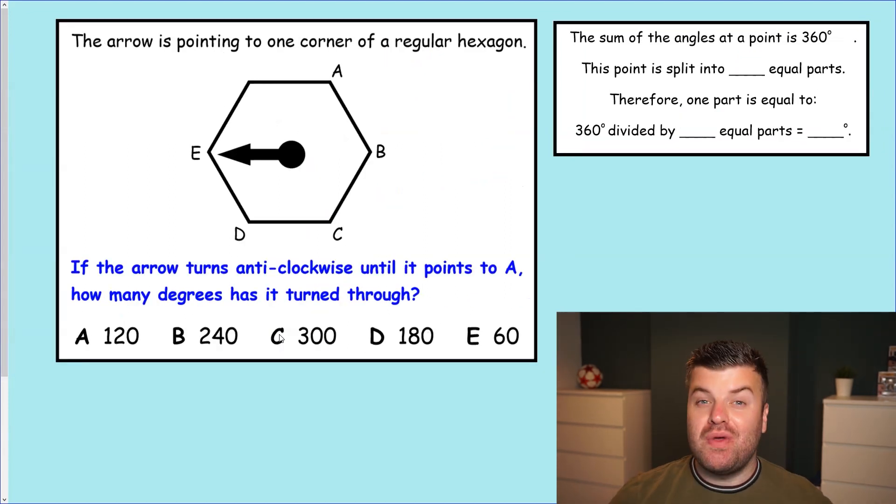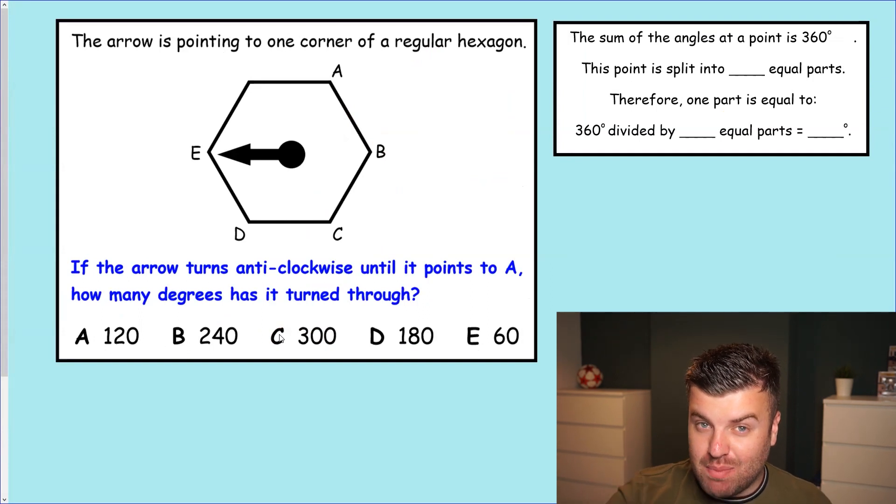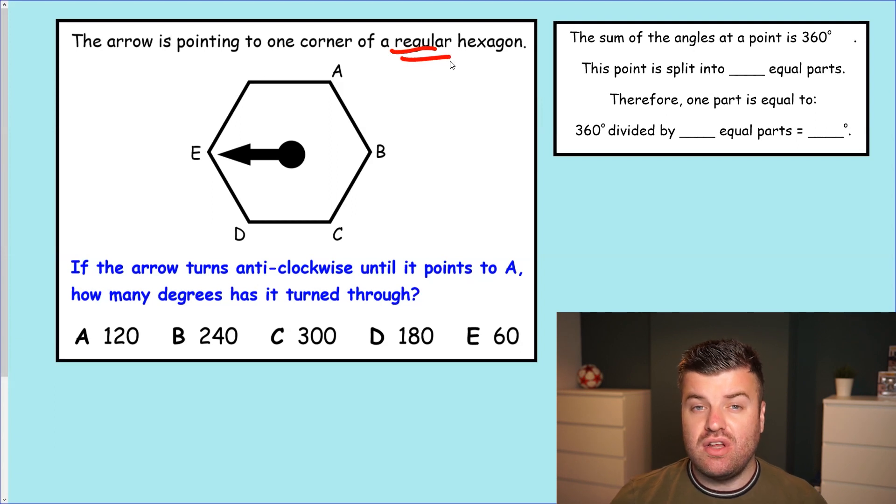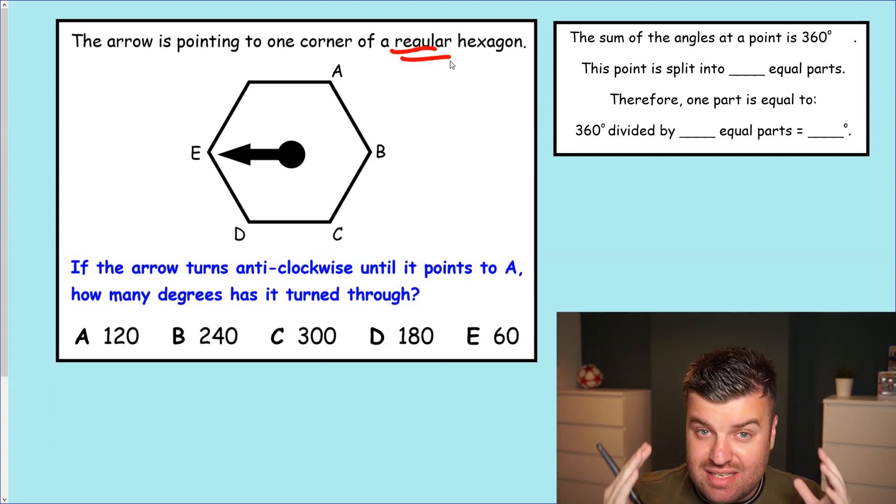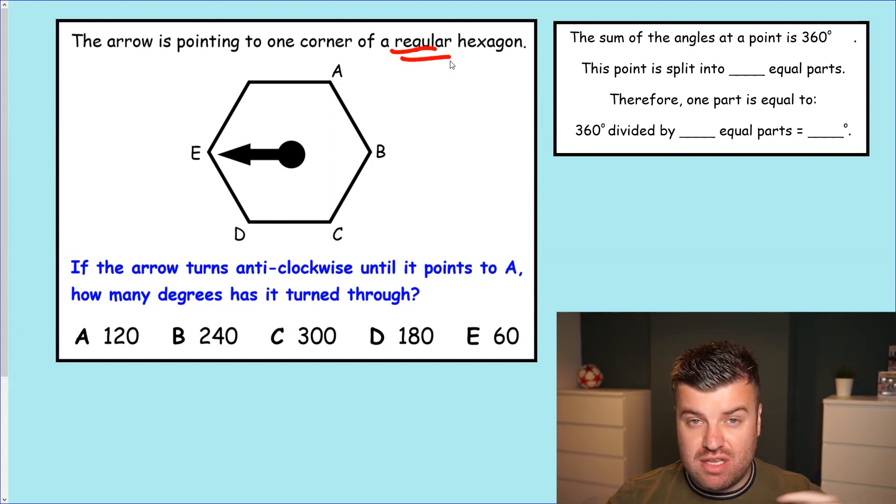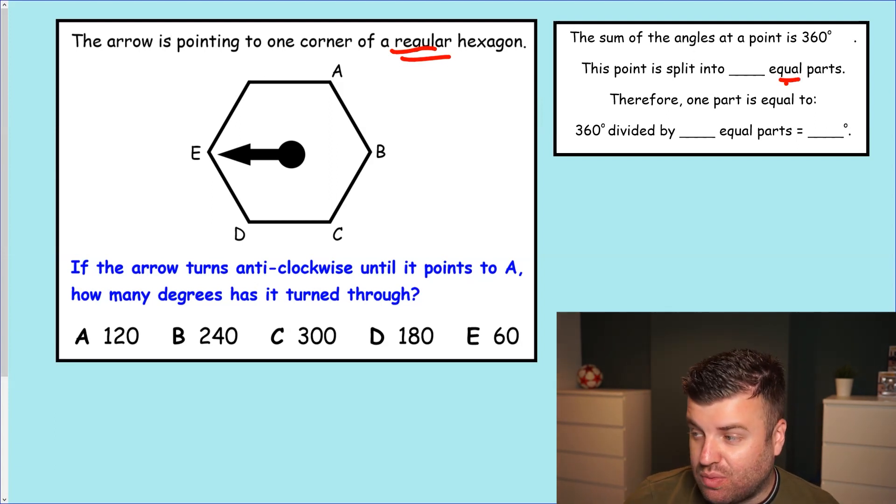Okay, different context now, but we still know that 360 degrees is our key number for the angles around a point. Let's take a look at this question. The arrow is pointing to one corner of a regular hexagon. This is really important. Because it's a regular hexagon, we know that the angles from each turn to each corner are going to be the same. If it was not a regular hexagon, our method would not work because they are not equal parts. It is a regular hexagon, though, so we can assume very safely that they are equal turns going around this hexagon.